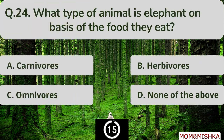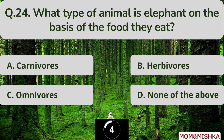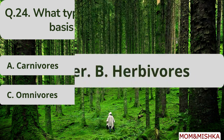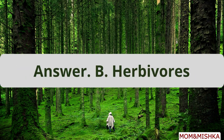What type of animal is the elephant on the basis of the food they eat? They are herbivores. Option B.